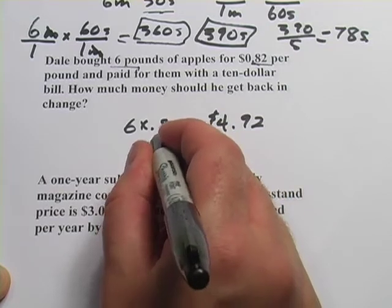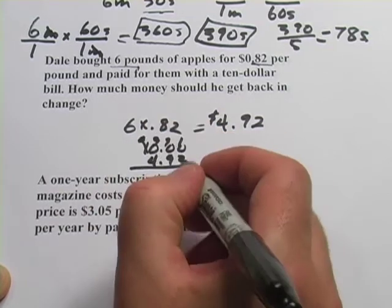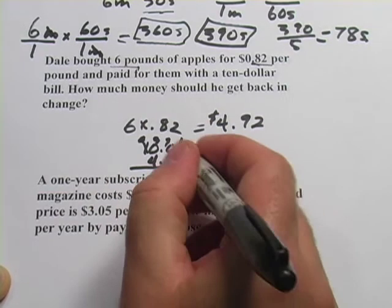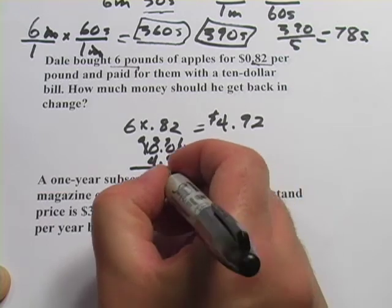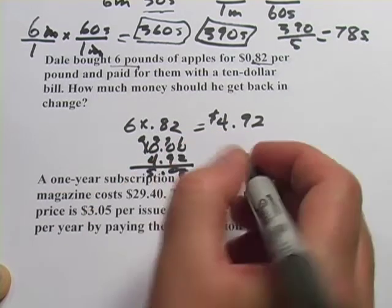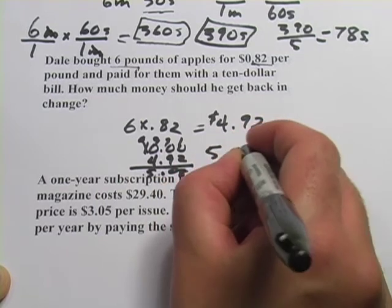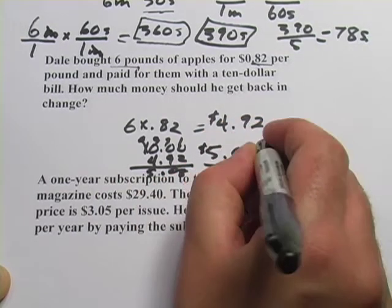So we have to do some borrowing here. 10 minus 2 is 8. 9 minus 9 is 0. 9 minus 4 is 5. And he gets, it's hard to see here, $5.08 back.